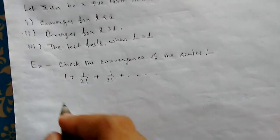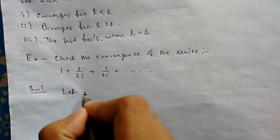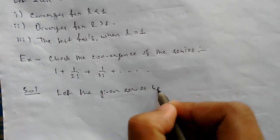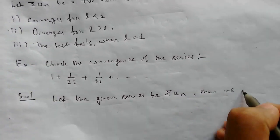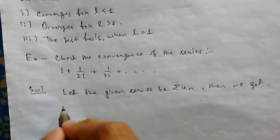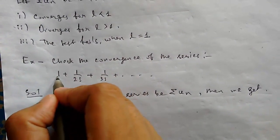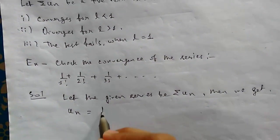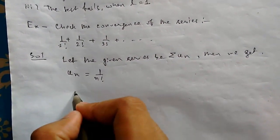Let us start the solution. Let the given series be summation U_n. Then we get U_n as, very simply, 1 upon n factorial. Now we have to